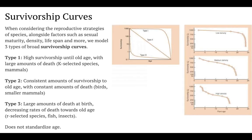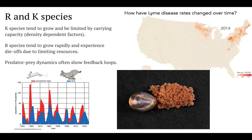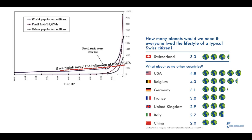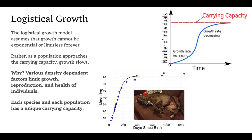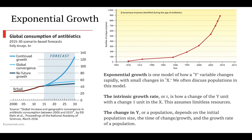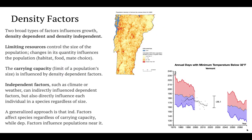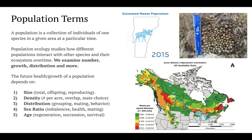That was modules 18 and 19 in a nutshell. You should feel good about different types of survivorship curves, r and K species, the logistic and exponential growth models, density factors, and population terms.